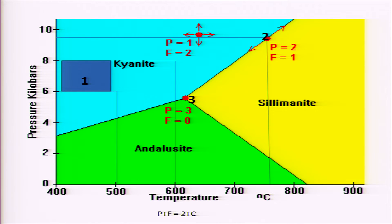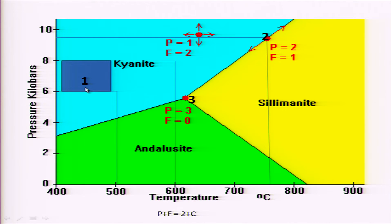Let us look at this diagram now. In this colorful diagram, there are three phases: kyanite as one phase, andalusite as another phase, and sillimanite as the third phase. These three phases are polymorphs — polymorphs are those in which the composition is the same but the minerals are different. Let us look at three different situations, which are marked as 1, 2, and 3.